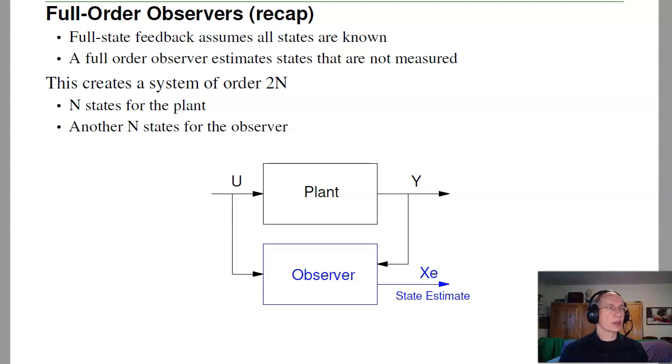As a recap, we've looked at full order observers. A full order observer is where I have a plant with a known input, a known output, but I can't measure all the states. In that case, I can build a full order observer that's basically an exact duplicate of the plant with some feedback gain h. That allows you to estimate all the states. The resulting system is order 2n. I've got n states for the plant, second n states for the observer.